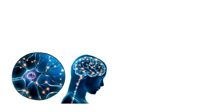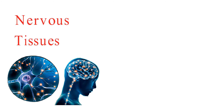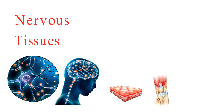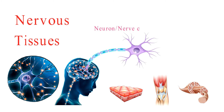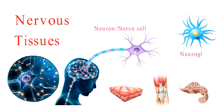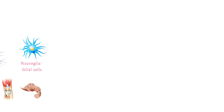Nervous tissue is one of the four primary types of tissues in the human body, alongside epithelial, connective, and muscle tissues. It's primarily composed of two main components: neurons, often referred to as nerve cells, and neuroglia, also known as glial cells.